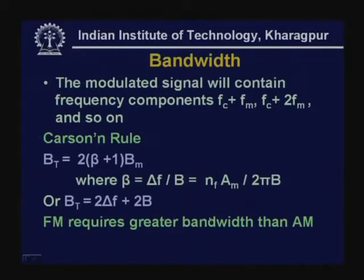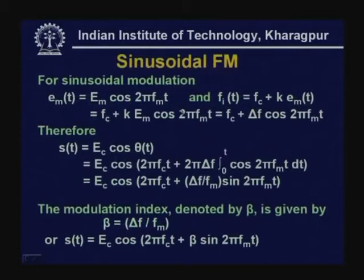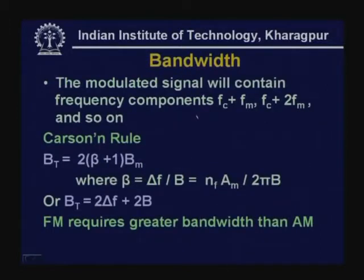You may ask: what is the bandwidth of this modulated signal? In the last lecture we saw that for amplitude modulation with a sinusoidal wave, the bandwidth equals twice the bandwidth of the modulating signal, and the amplitude varies. In FM, because of the sinusoidal phase term, the modulated signal contains various frequency components — f_C plus f_M, f_C plus 2f_M, and so on — so the bandwidth will be much higher, and the expression for bandwidth requires a complicated mathematical expansion.